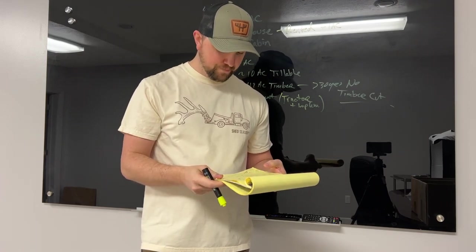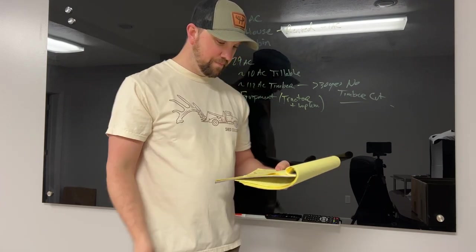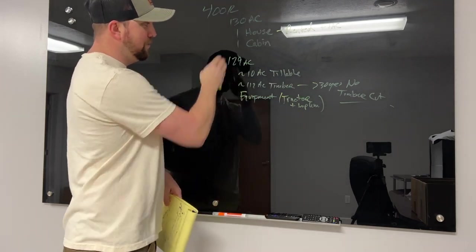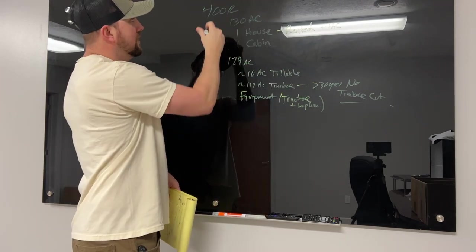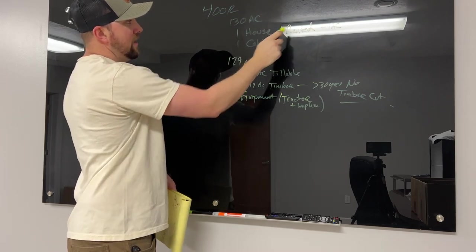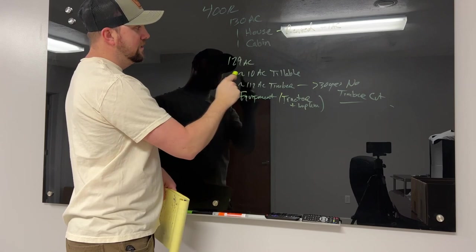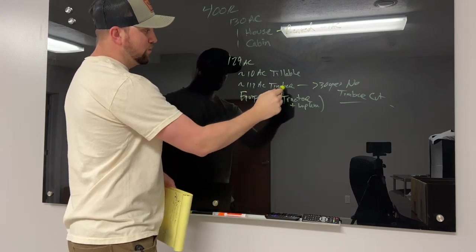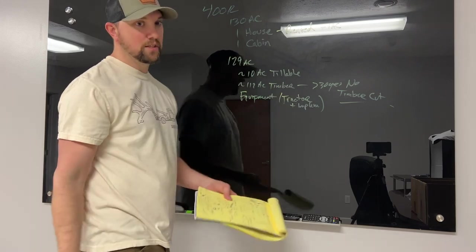So this is kind of the basis of how this is set up. Hopefully you can see this yellow a little bit better. $400,000 was list, 130 total acres, house that was being rented, cabin, 129 acres of land of which 119 was timber, 10 acres of tillable.